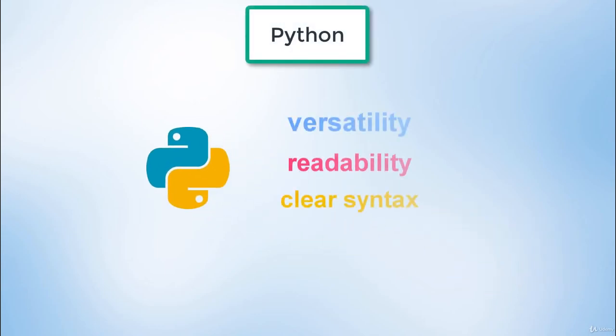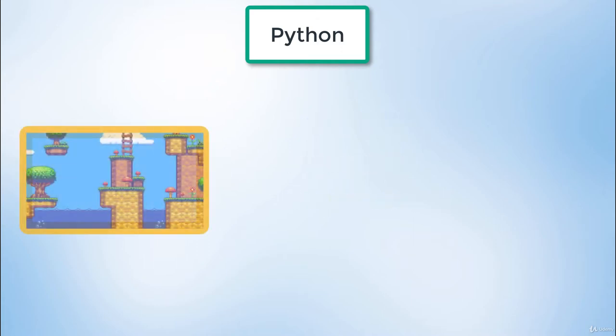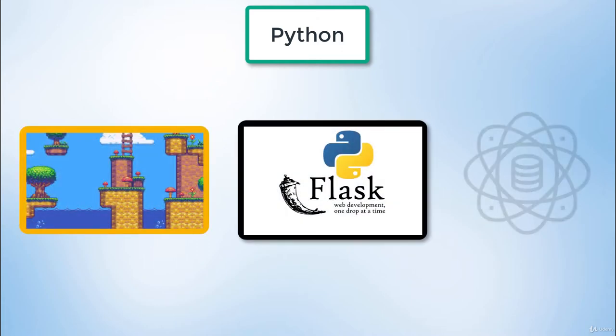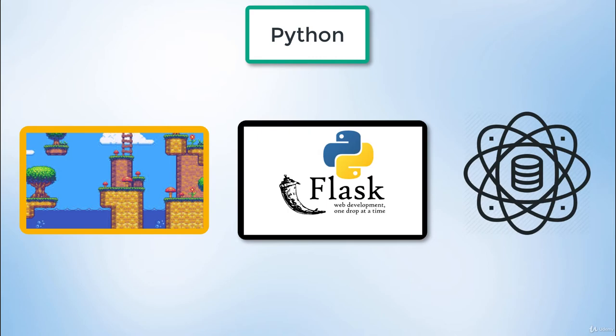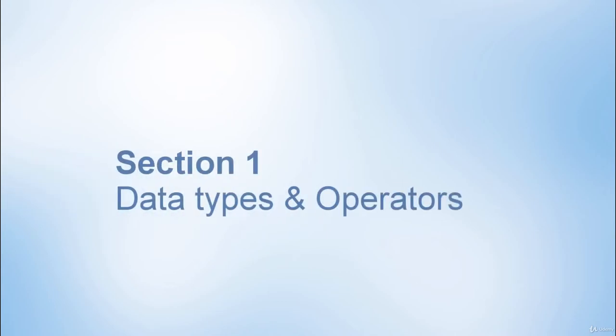Mastering Python is a great skill to have, mainly because it's a general-purpose language designed for creating all sorts of different programs. It can be used for game development, web development, and even data science. In this first section of the Python Crash Course, you will familiarize yourself with the main building blocks of Python: data types and operators. Let's jump into our first lesson, which is to install Python through Anaconda.